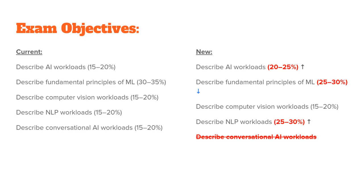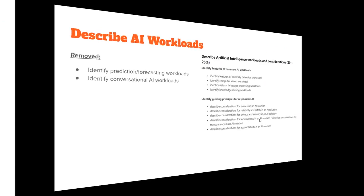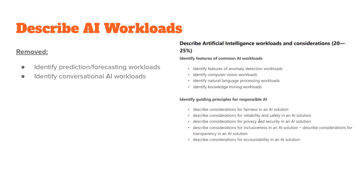So let's talk about the individual changes. In the first objective, describe AI workloads, what they've done is removed a couple of minor requirements having to do with identifying prediction and forecasting workloads, and identifying conversational AI workloads. All of the rest have pretty much remained the same, and we can see the new requirements on screen.